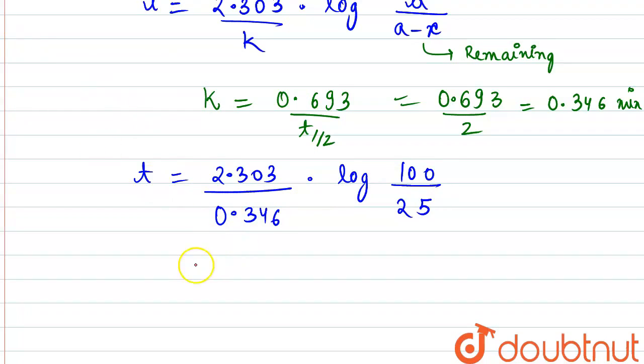So from here, what is the value of T that we would be getting? 2.303 divided by 0.346 multiplied by 0.60, and it comes out to be equal to 4 minutes, which is the final answer. Thank you.